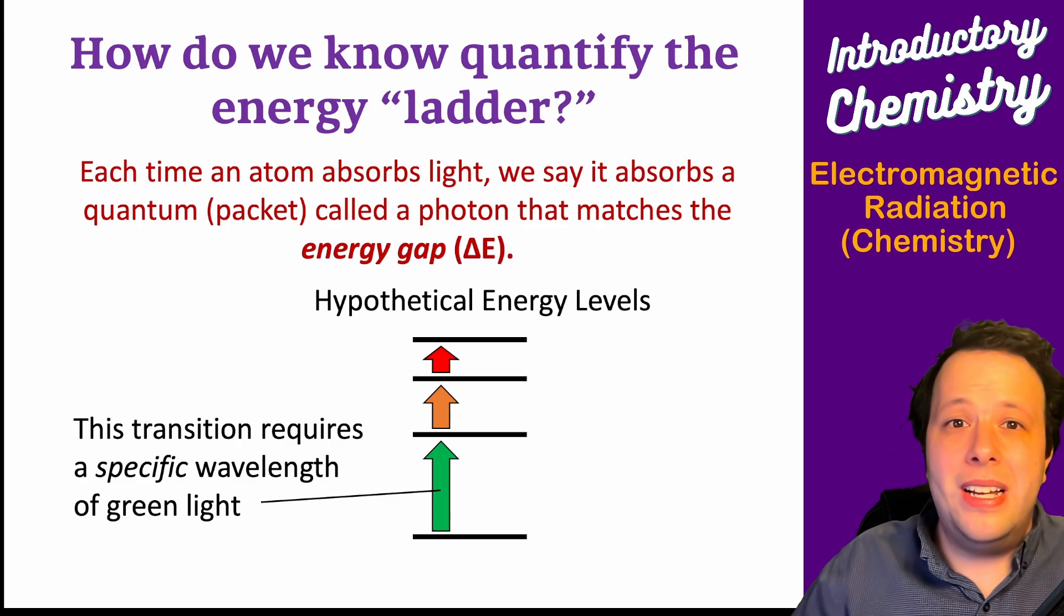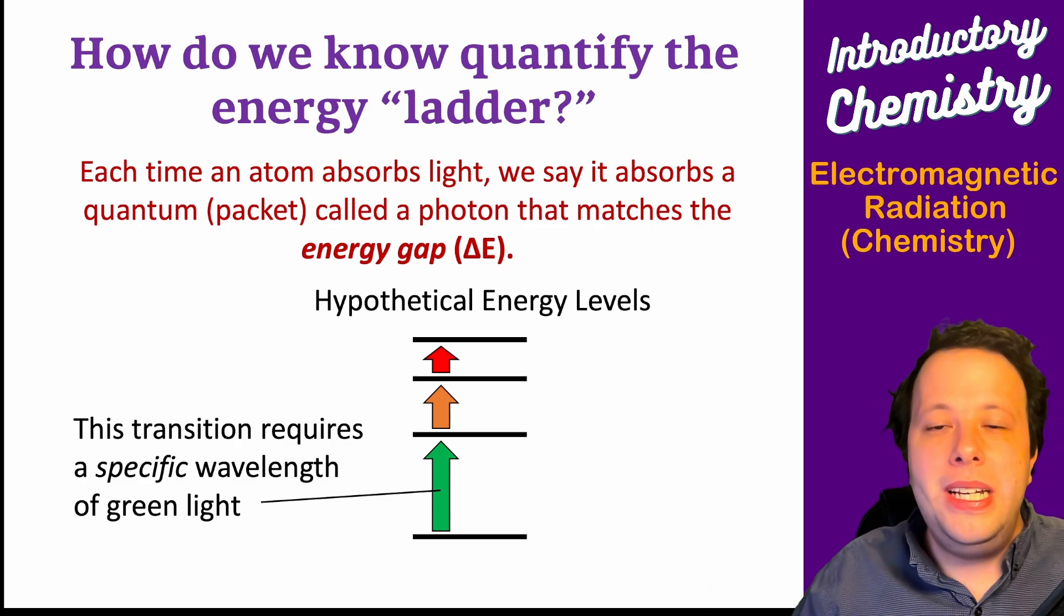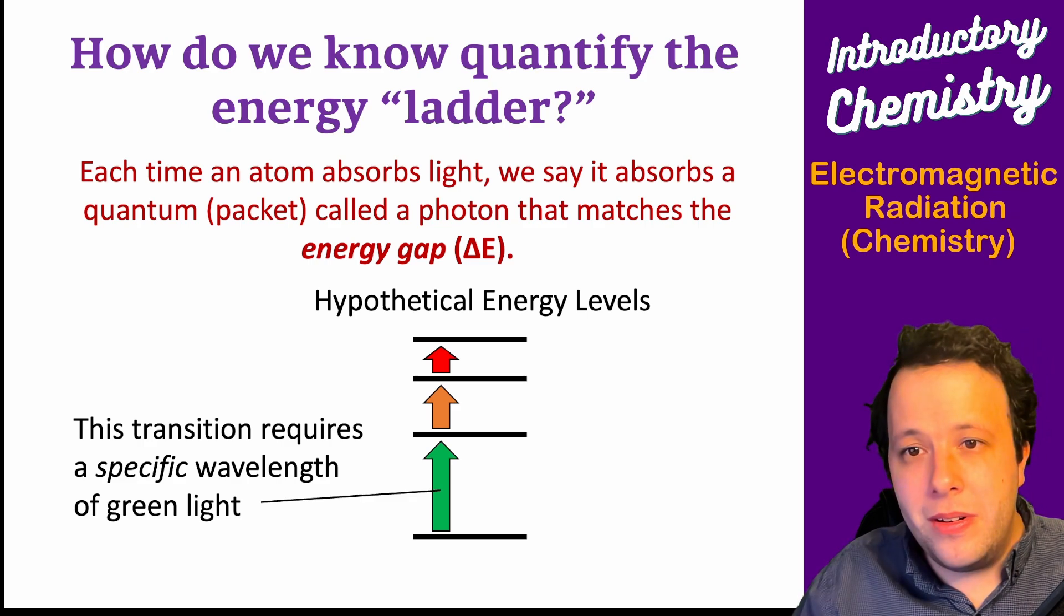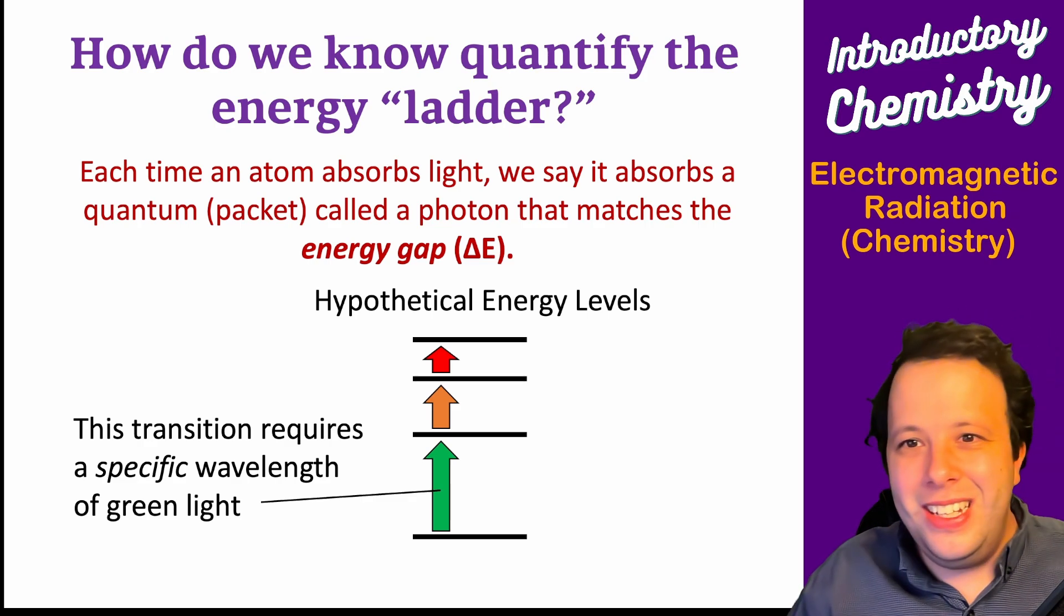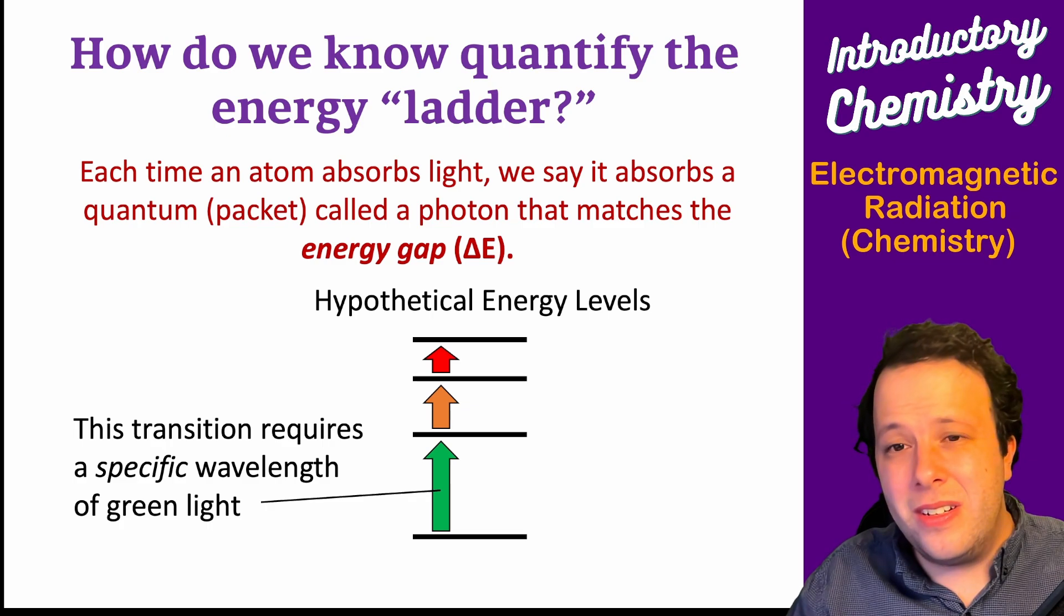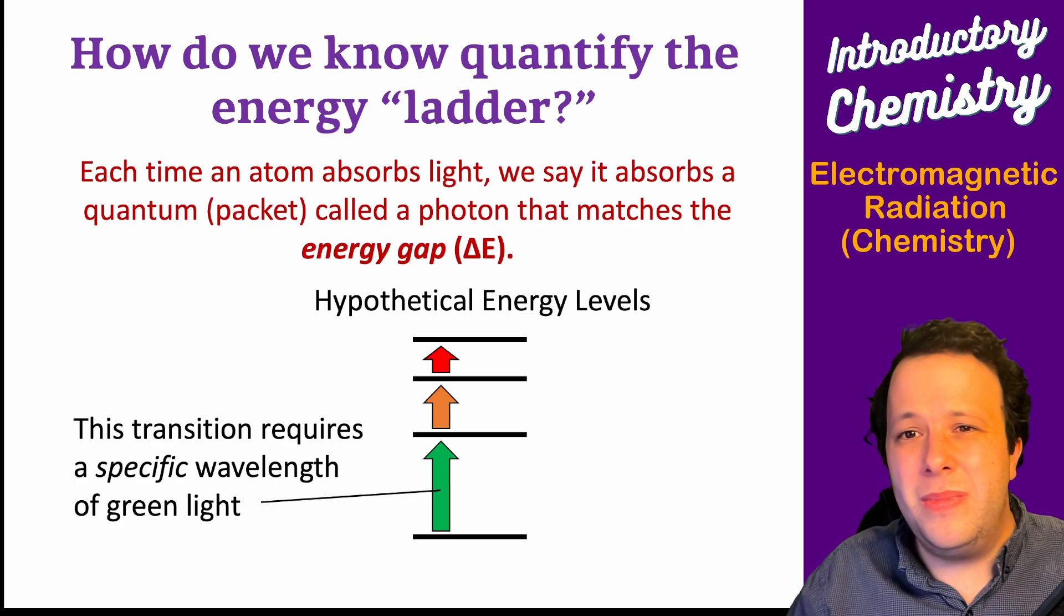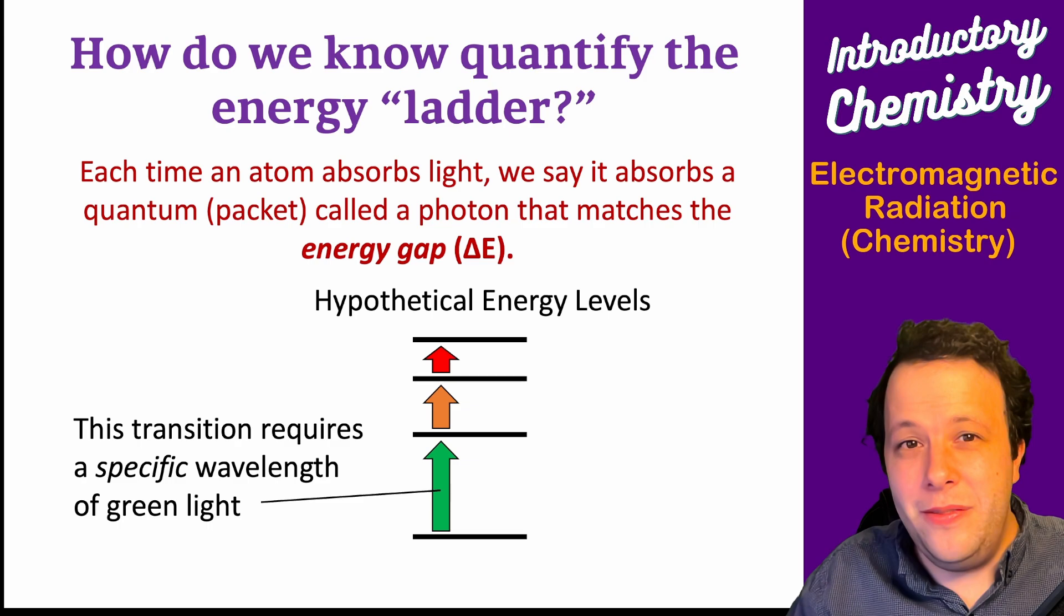These are referred to as energy gaps, meaning in order to either go up or go down, it needs to either absorb, get excited, or essentially release or relax a very specific amount of energy which we'll see via a photon.